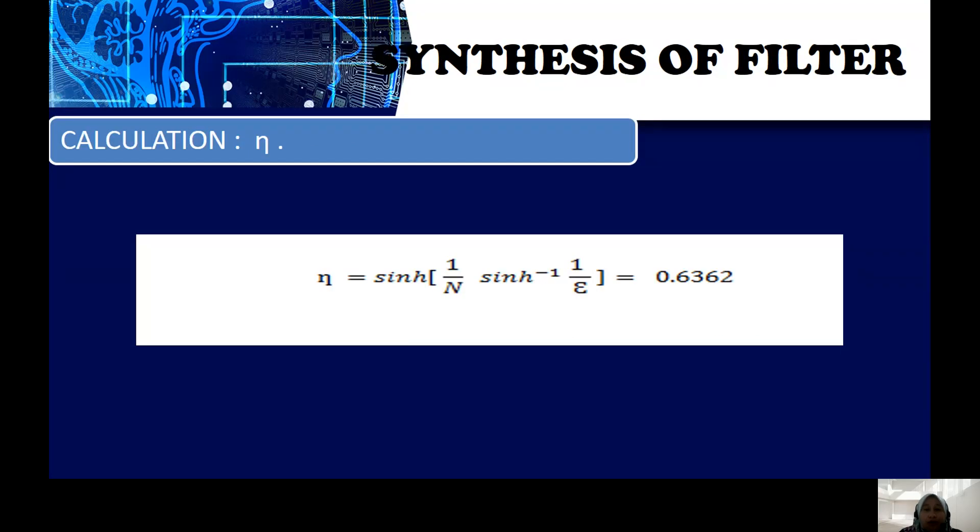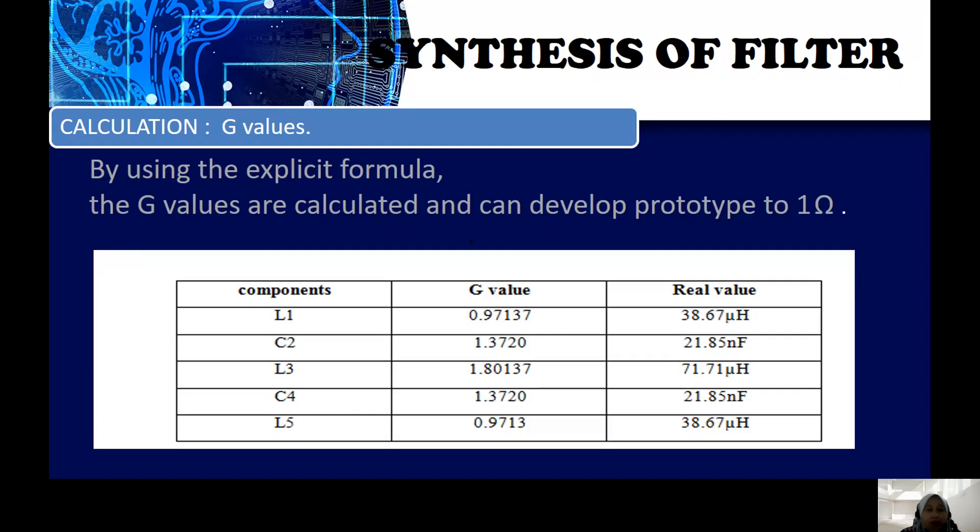Next, we have to calculate the efficiency, which yields the number of 0.6362. The fifth order of the filter then used to calculate by using the analytical formula and yields the value of G1 to G5. Basically, G1 to G5 represent the components in this fifth order filter, which is L1, C2, L3, C4, and L5.